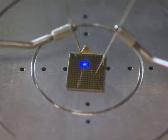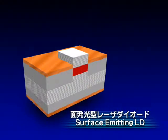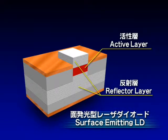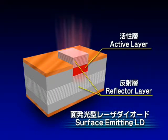This purple light is produced by a surface emitting laser diode using a nitride semiconductor. In a surface emitting laser diode, the active layer is sandwiched by reflector layers. Active research on this device is being conducted around the world.